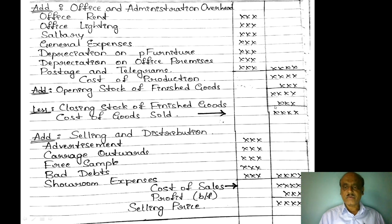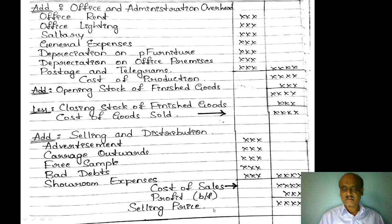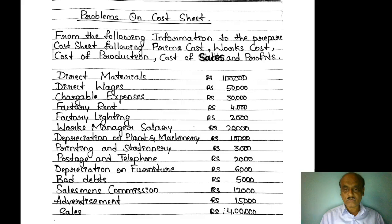Then add closing stock of finished goods and deduct opening stock of finished goods to get cost of goods sold, also called cost of sales. Then sales minus cost of sales gives us profit. So this is the cost sheet proforma — items and amount.